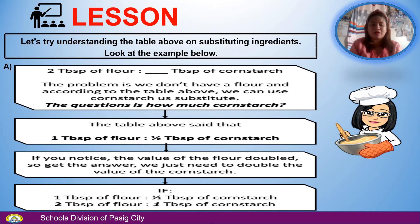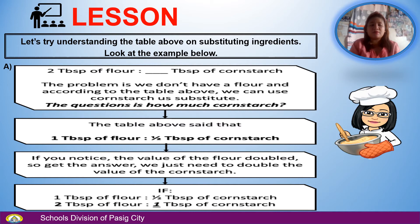Let's try understanding the table above on substituting ingredients. Look at the example: 2 tablespoons of flour equals blank tablespoons of cornstarch. The problem is we don't have flour, and according to the table, we can use cornstarch as a substitute. The table says 1 tablespoon of flour equals one-half tablespoon of cornstarch. Since the flour doubled, we just double the cornstarch. So 2 tablespoons of flour equals 1 tablespoon of cornstarch.